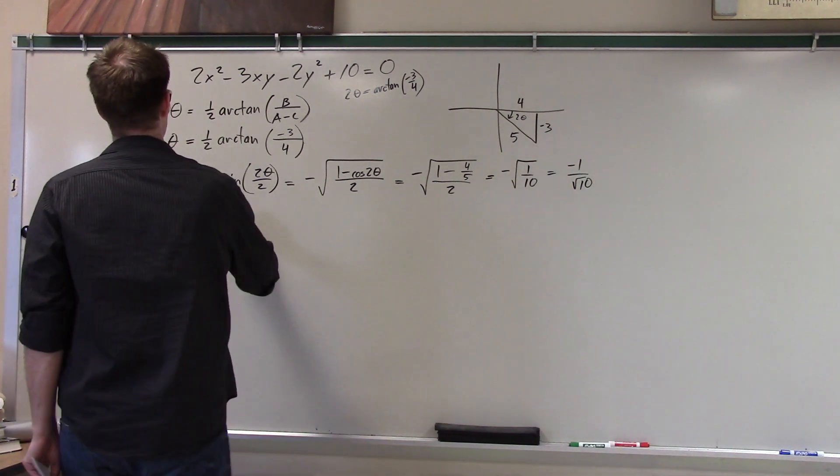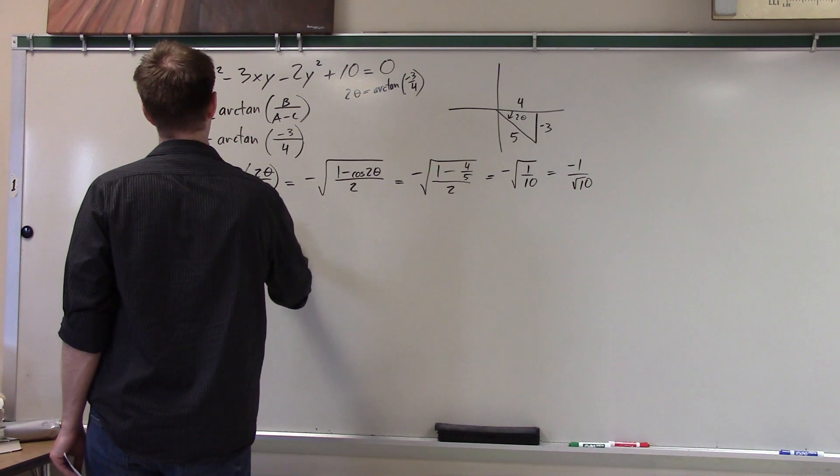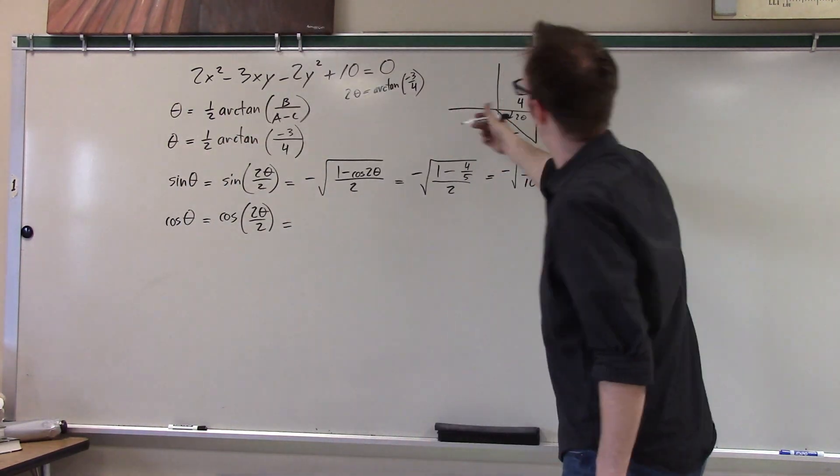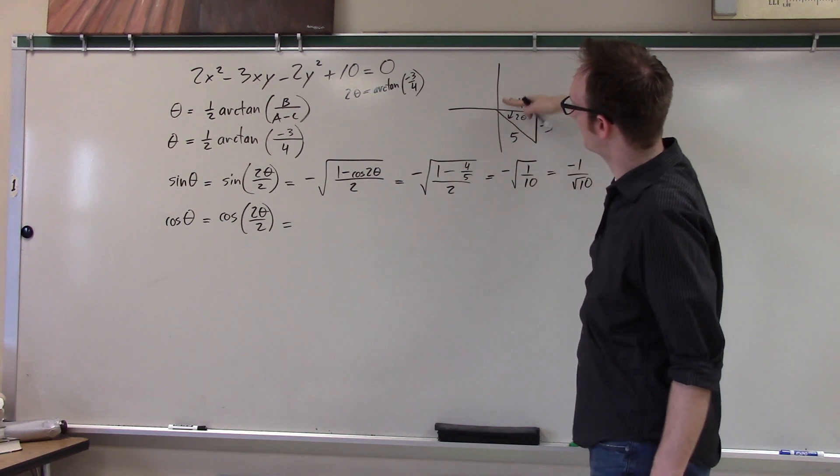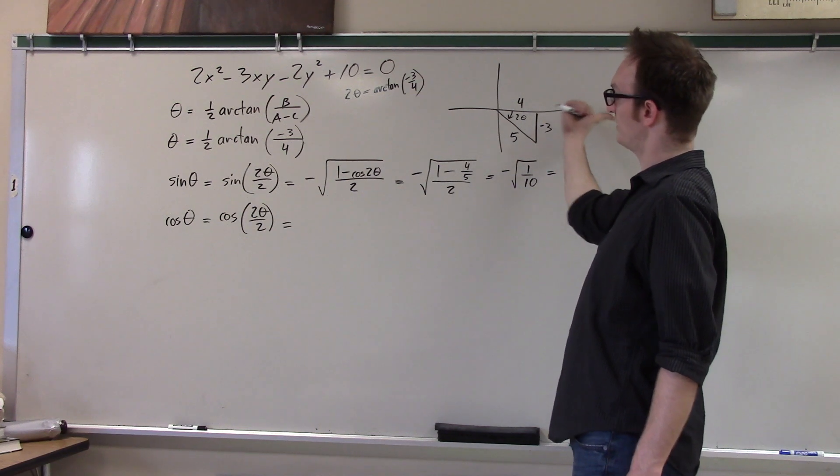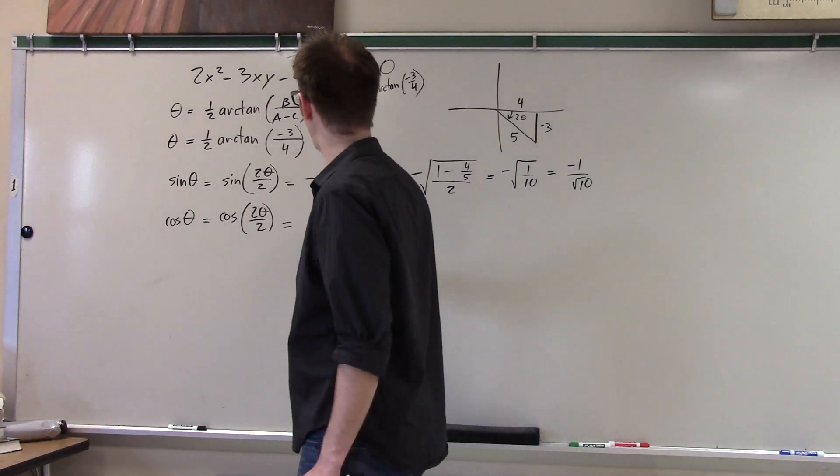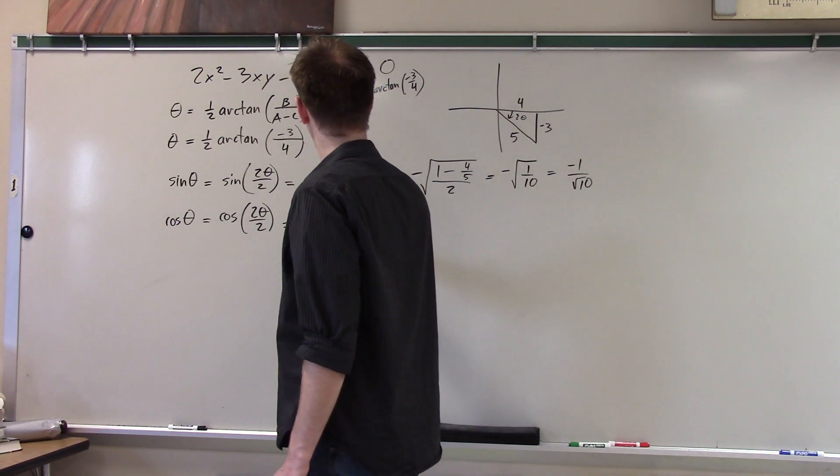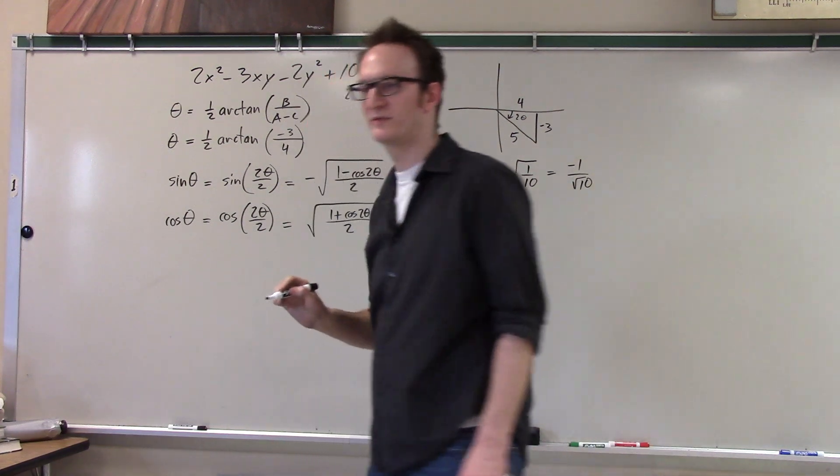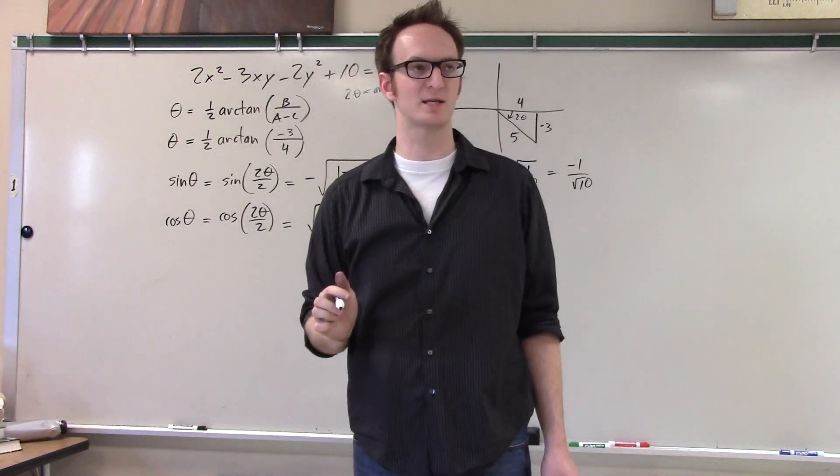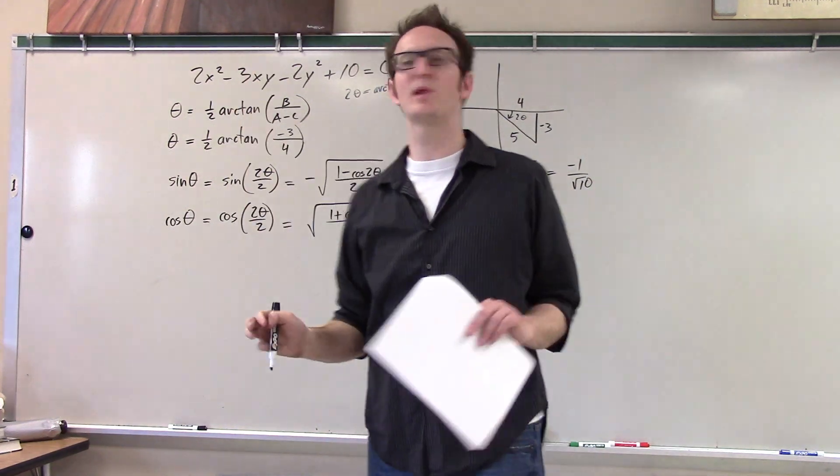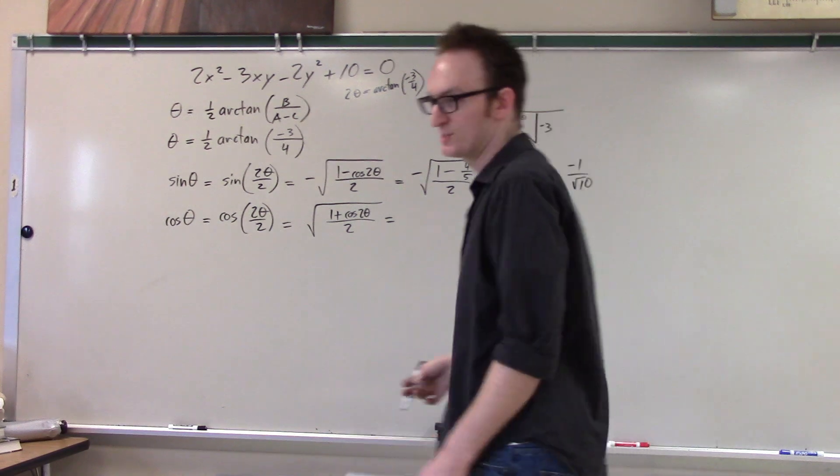And then we can just you know keep on going with this so what is that that's negative root one minus and cosine two theta is four fifths so this is one minus four fifths over two and that reduces to negative root one tenth right yeah or you could just write it as negative one over root ten so this is already like to heart just alone.